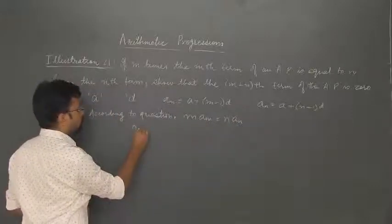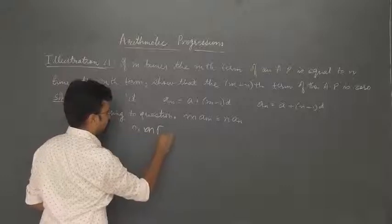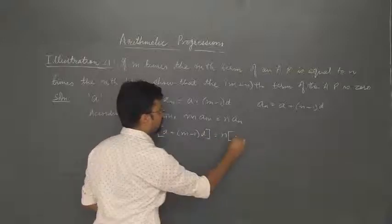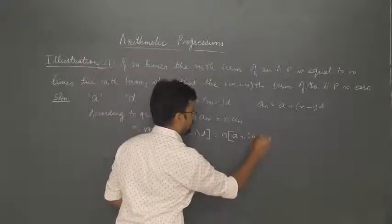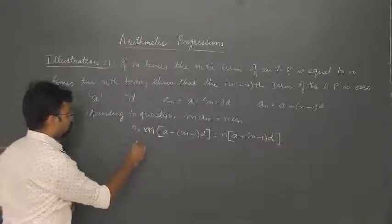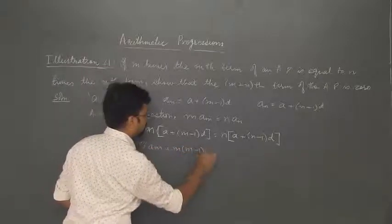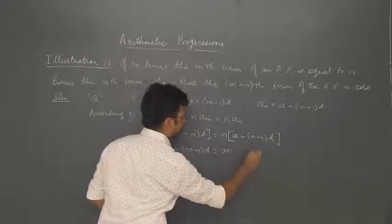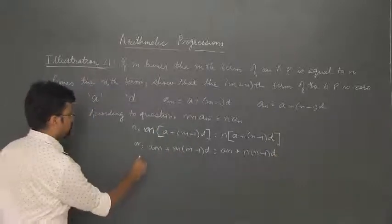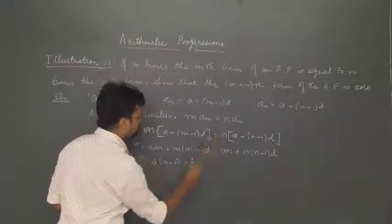So we have: m times the mth term is equal to n times the nth term. Substituting, we get m times [a plus (m minus 1) into d] is equal to n times [a plus (n minus 1) into d]. This gives us: ma plus m(m minus 1)d is equal to na plus n(n minus 1)d.